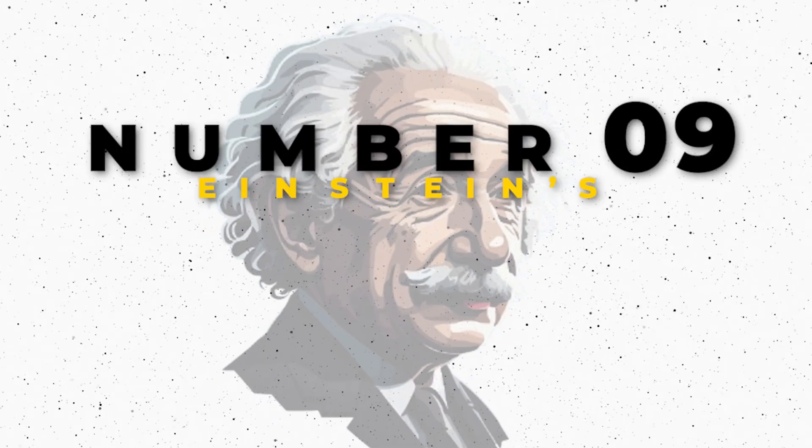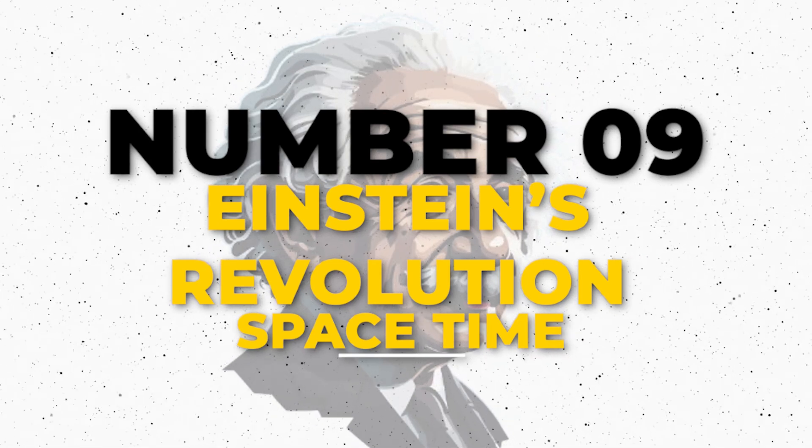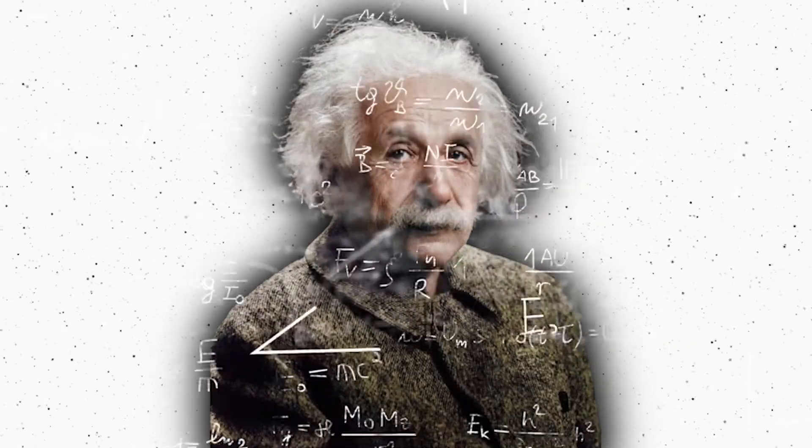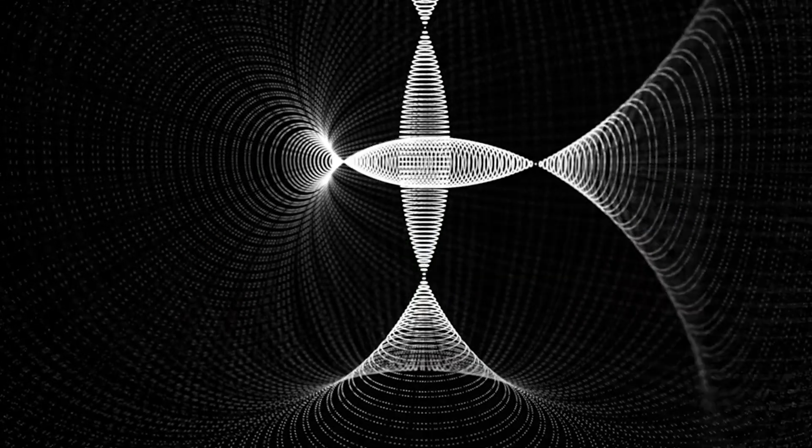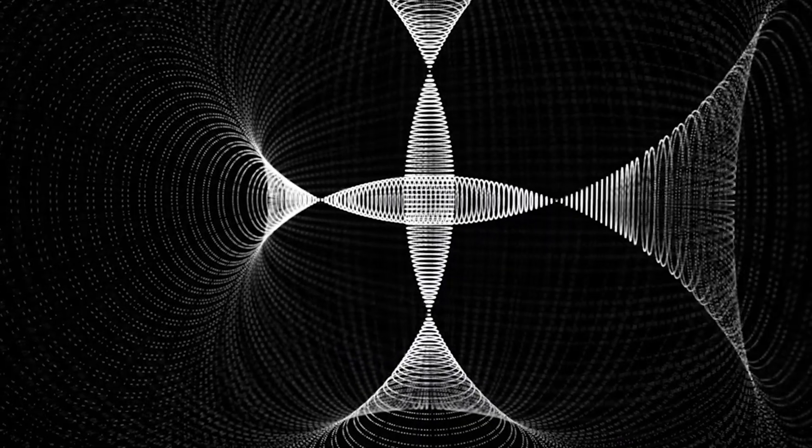Number 9: Einstein's Revolution – Spacetime. In 1905, Albert Einstein's special theory of relativity started to alter our understanding of time. Time was thought to be a universal constant prior to Einstein, moving at the same rate for everyone, everywhere.